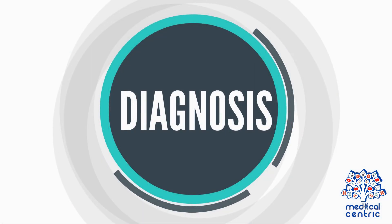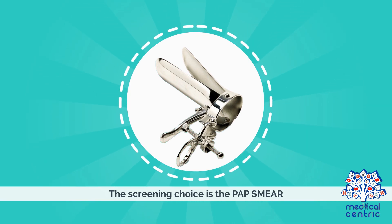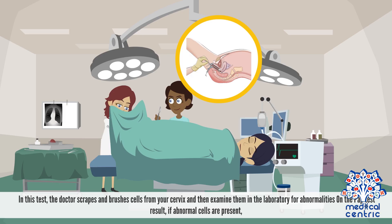According to national guidelines, women should have a cervical screening beginning at age 21, continuing at least every 3 years until age 50. This regular screening is essential to detect and treat early precancerous changes and prevent cervical cancer. The screening choice is the pap smear. In this test, the doctor scrapes and brushes cells from your cervix and then examines them in the laboratory for abnormalities.